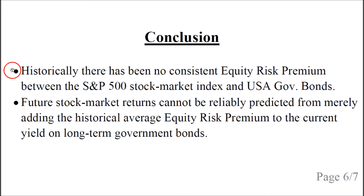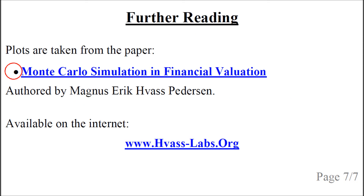The conclusion is that historically there has been no consistent equity risk premium between the S&P 500 stock market index and US government bonds. Future stock market returns cannot be reliably predicted from merely adding the historical average equity risk premium to the current yield on long-term government bonds. The plots in this talk were taken from a paper which can be found on the website linked below the video.